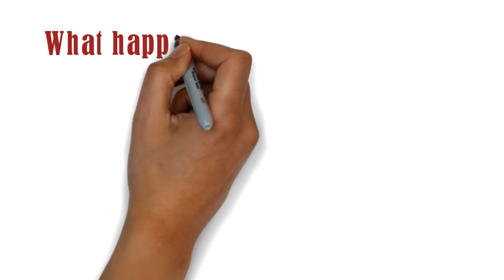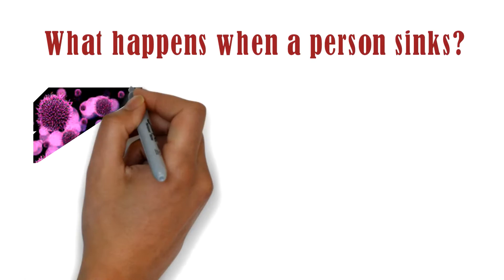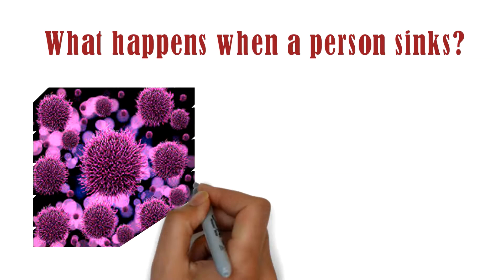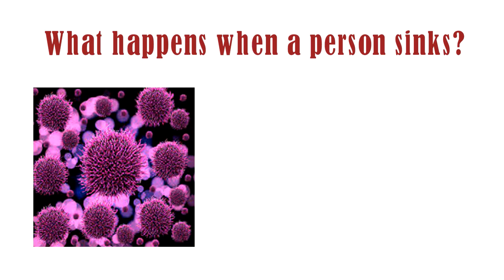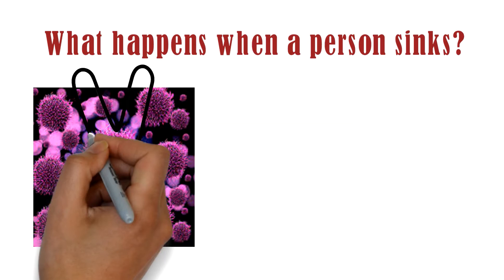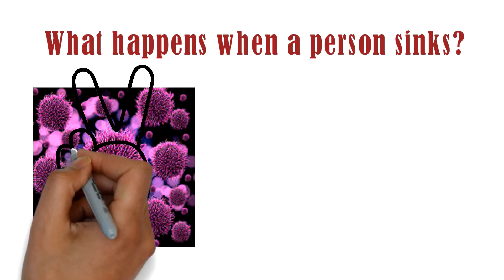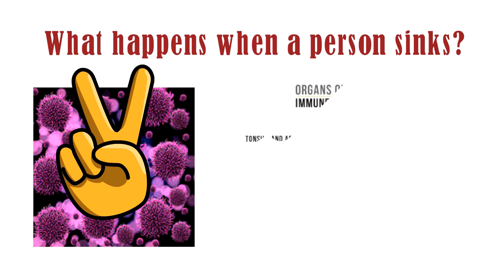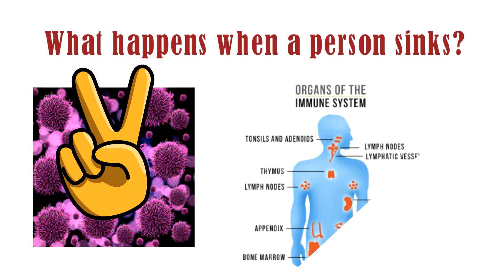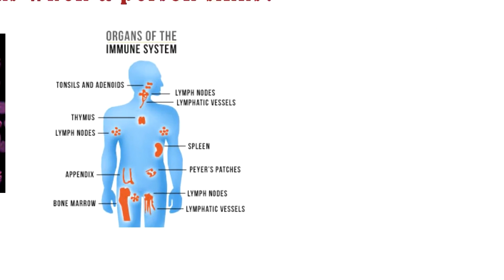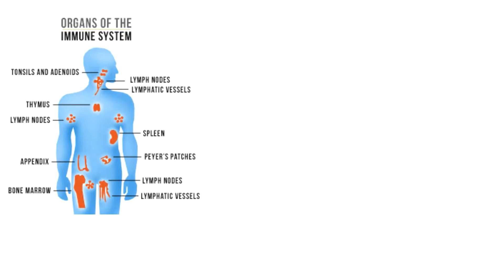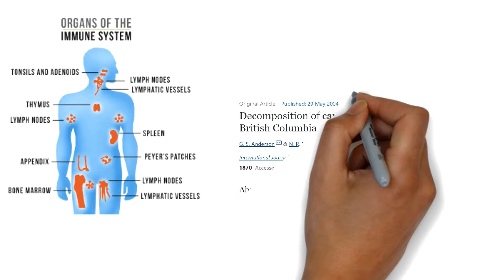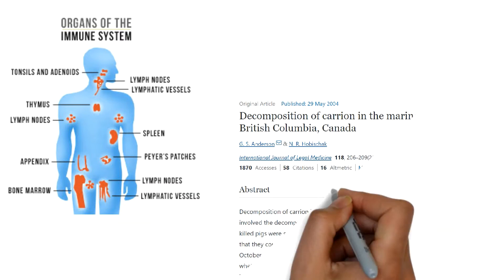What happens when a person sinks? Billions of microorganisms, primarily bacteria, live inside our body. Some of these bacteria can cause disease, but most of them are harmless and even useful to us. The immune system keeps a check, preventing them from infecting us. But without the immune system, many of these peaceful microorganisms begin to infect the body and consume it.